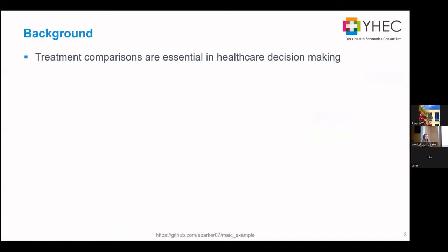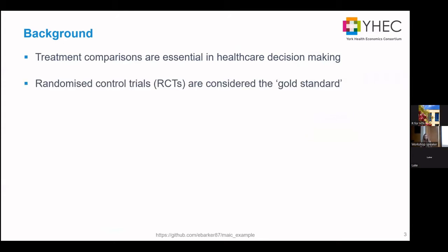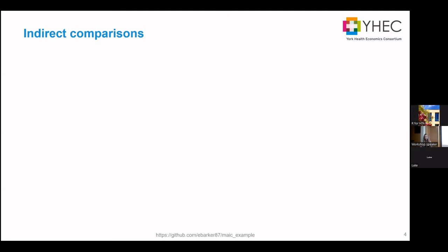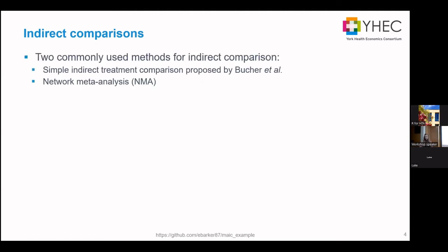Relative treatment effects are essential in healthcare decision making and usually come from randomised control trials where we compare two things head to head — that's the gold standard. If we have multiple RCTs, we do a meta-analysis. But the problem arises when we don't have RCTs to make direct comparisons with, and we have to make indirect comparisons. The two common methods are the simple indirect comparison and network meta-analysis.